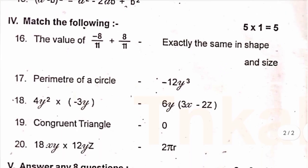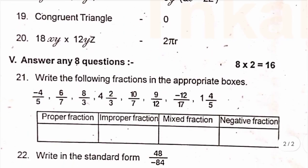Perimeter of a circle, and eighteen, four y square into minus three y. Then congruent triangle, then eighteen xy into twelve yz. So either solve panni right side kye, match the following. Just practice, answer will be uploaded later.